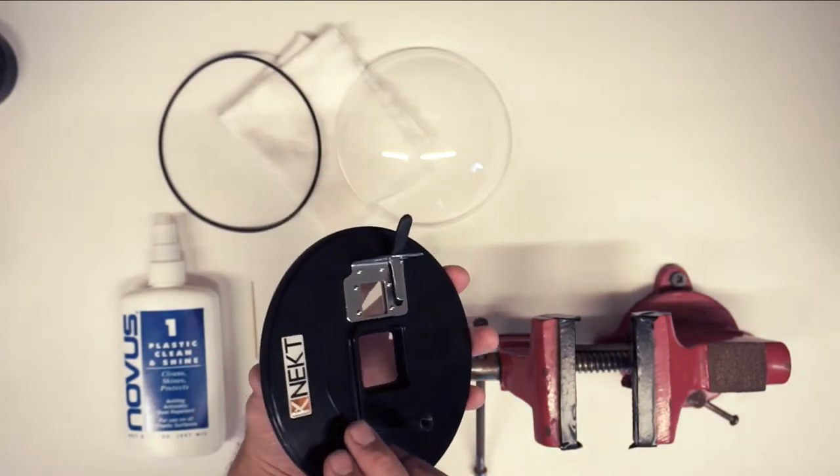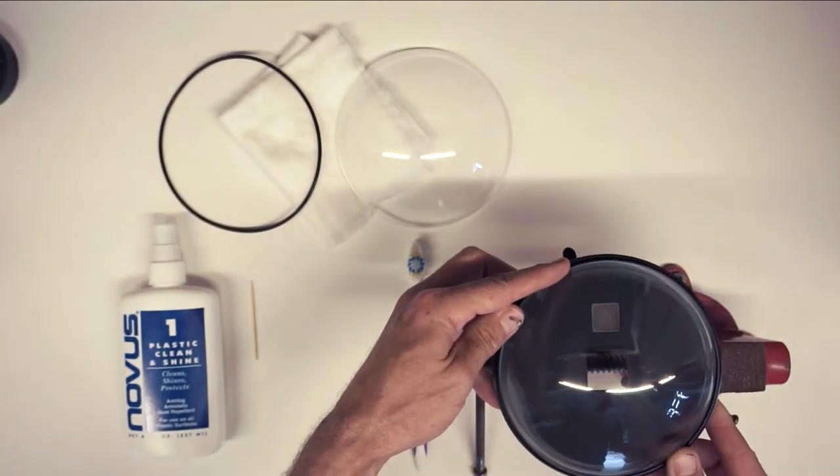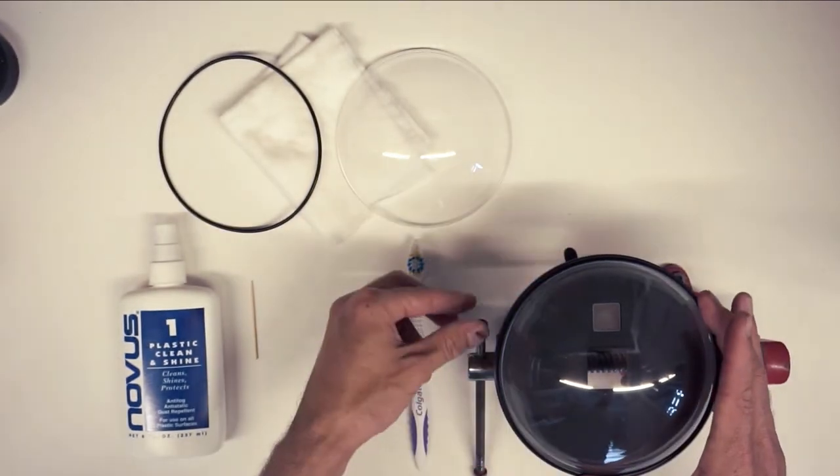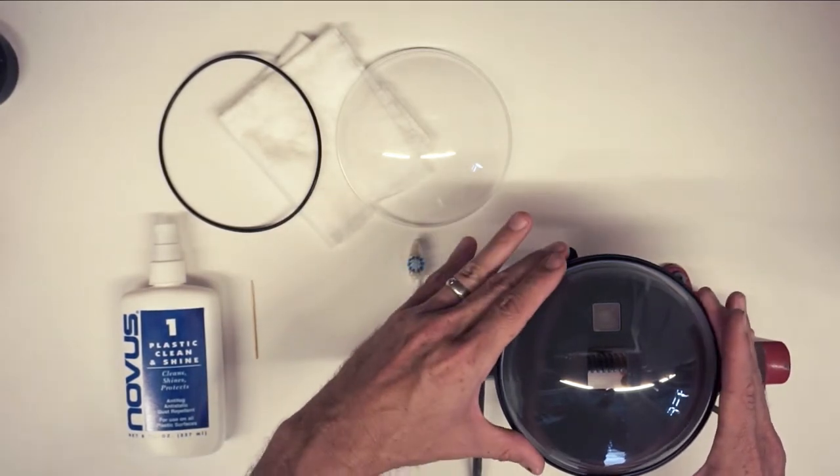Then the next thing you're going to do is align these two edges with the table vise, slightly tighten it just so that it's firm and it doesn't wiggle. It doesn't have to be over-tightened or you're going to damage it.